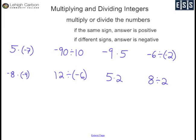On to multiplying and dividing integers. You multiply or divide the numbers as the problem calls for. If they have the same sign, your answer is positive. If they have different signs, your answer is negative.